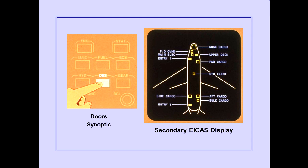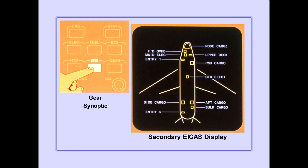Pushing the doors synoptic switch on the ICAST display select panel displays the doors synoptic on the secondary ICAST display. Pushing the gear synoptic switch on the ICAST display select panel displays the gear synoptic on the secondary ICAST display. This display provides real-time information about gear and door positions and brake temperatures.